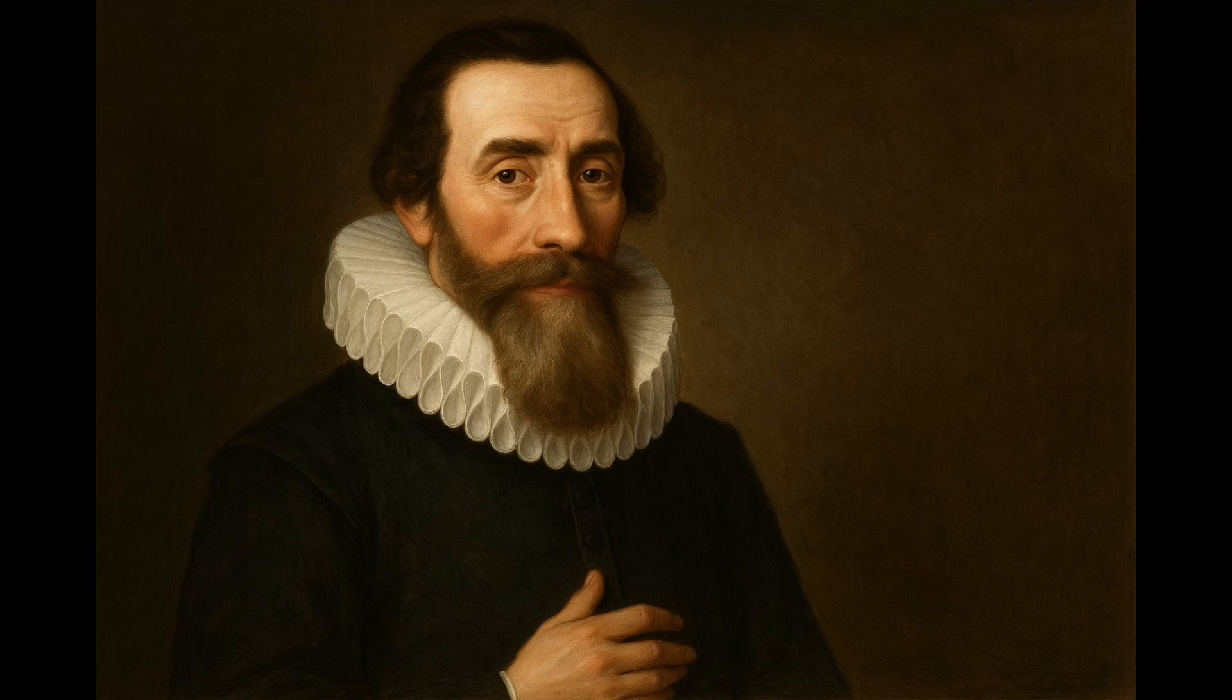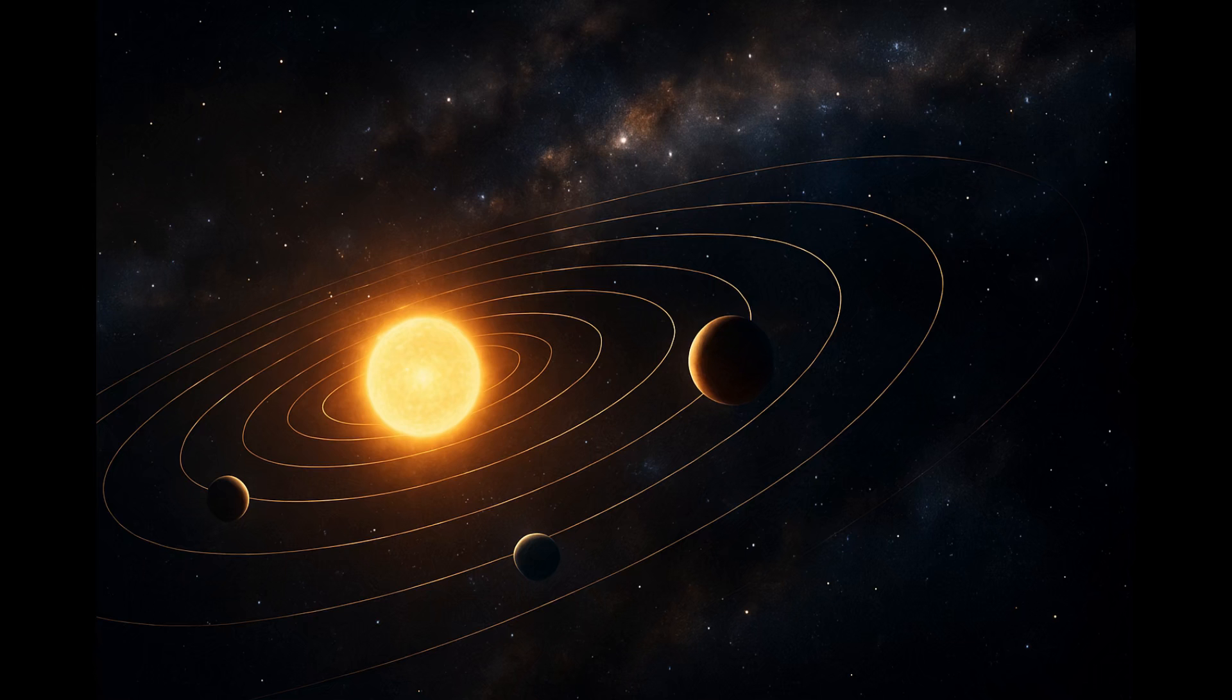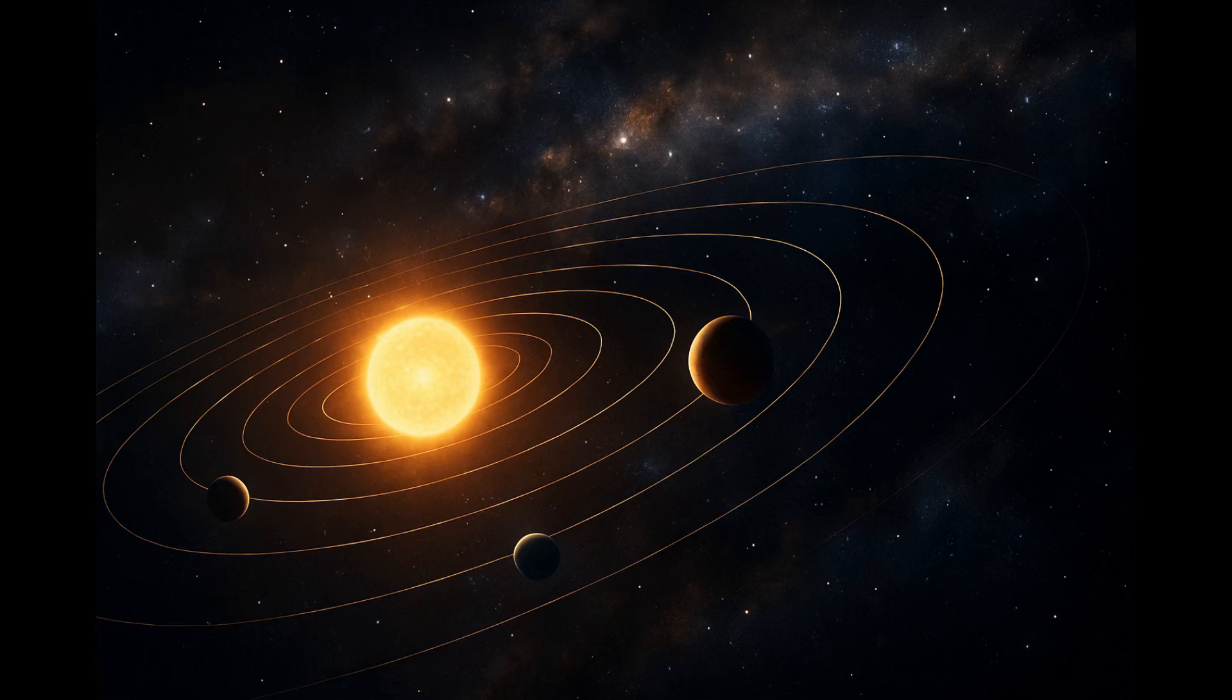He discovered the planets do not move in perfect circles, but in ellipses. And the closer they are to the sun, the faster they move. With his three laws, Kepler described for the first time how our solar system moves. But he still didn't know why.